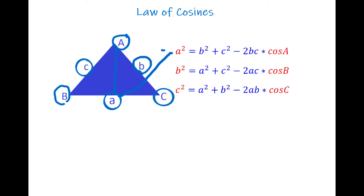The square of side a is equal to b squared plus c squared minus two times bc times the cosine of the angle between them — so it's going to be minus 2bc times cosine A. It looks a little bit complicated, but let's see how we can memorize it.